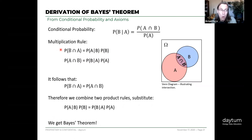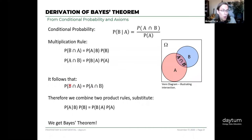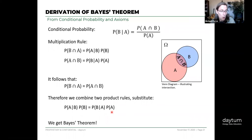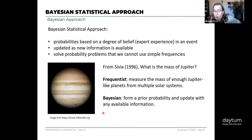From the definition of conditional probability, we can rearrange algebraically - multiply both sides by P(A) - to get the multiplication rule: P(A and B) = P(B|A) × P(A). We can write the mirror image as well. Since P(B and A) = P(A and B), we can substitute and combine both multiplication rules to arrive at Bayes' theorem: P(A|B) = P(B|A) × P(A) / P(B).